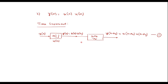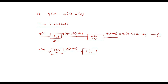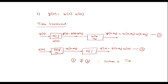Now I will swap the systems. Using a delay system with input x of n, the output is x of n minus n-naught. Passing this delayed input through the same system having operator h — whose characteristic is to multiply the input with u of n — gives y dash of n equal to x of n minus n-naught times u of n. This is equation 2. Since equation 1 is not equal to equation 2, therefore the system is time variant.